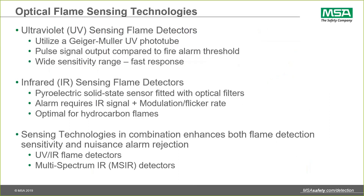What's happened in recent times is that these sensing technologies are used in combination to enhance both detection of a real fire and rejection of nuisance alarm sources. The two most common technologies used in the industry today are combination ultraviolet-infrared (UVIR) flame detectors and multi-spectrum IR (MSIR) flame detectors.